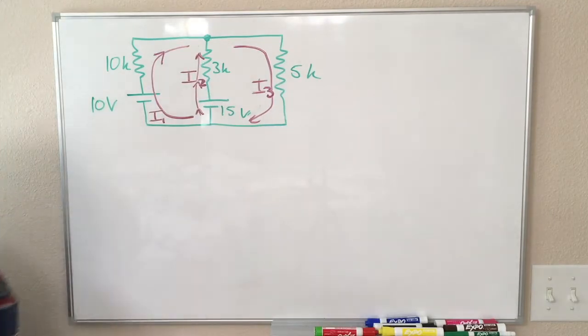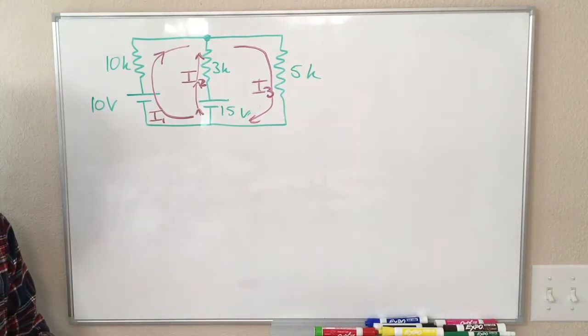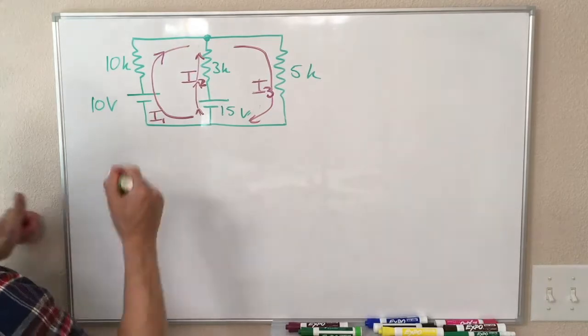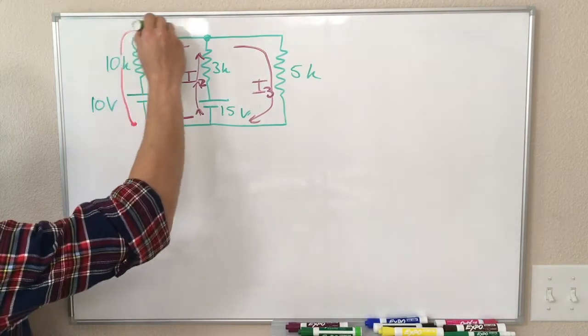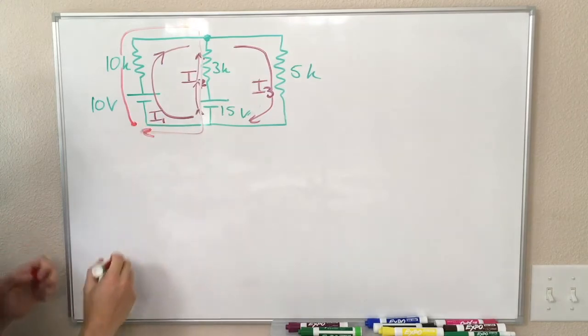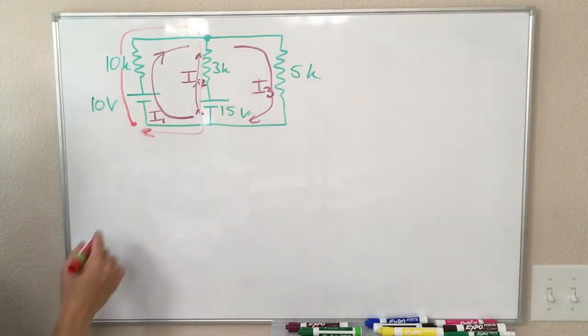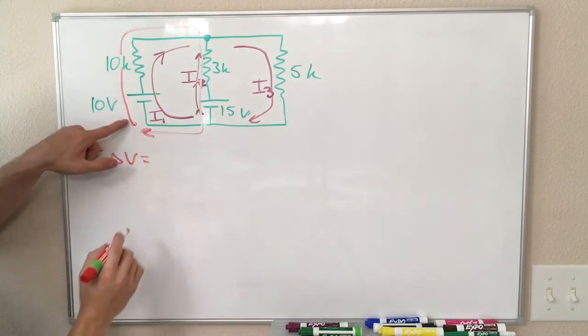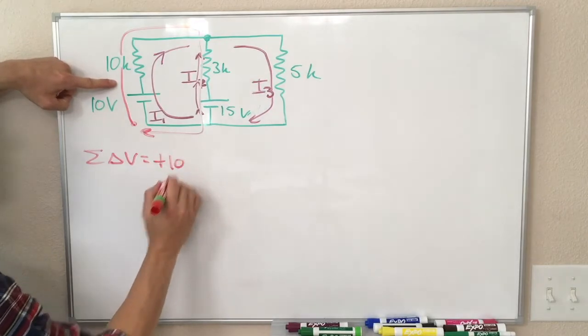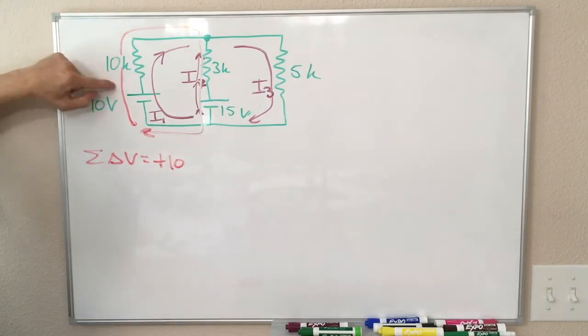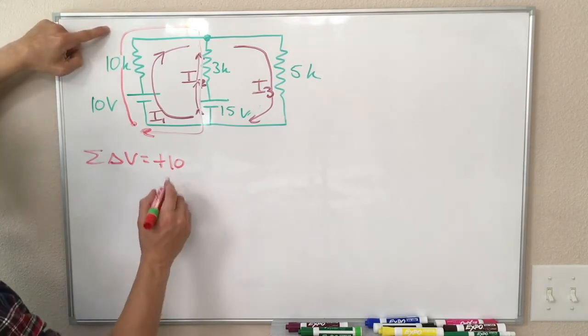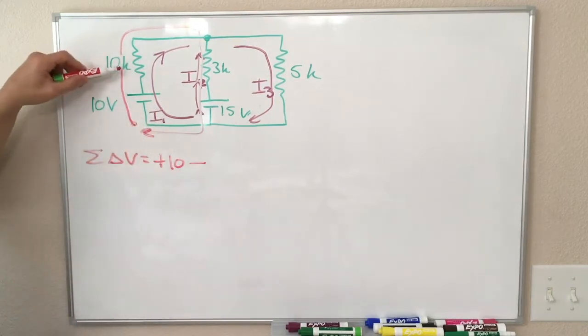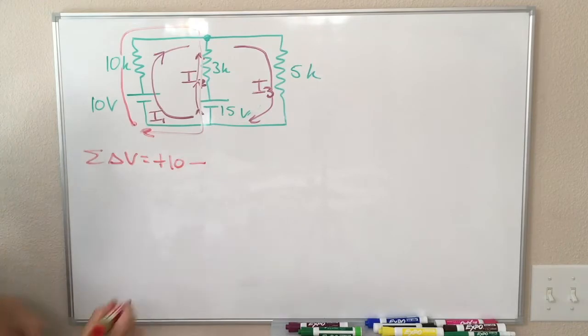So we've defined the currents in our branches. Now we need to use Kirchhoff's voltage law a few times. So first, let's do this loop on the left, starting here and going around like that. So this is messy, sorry, but we can at least still see what's going on. So going from here to here, I'm increasing my potential by 10 volts. So I'm going up 10 volts. And then I'm going down some amount through the 10k resistor, and that is going to be equal to IR.